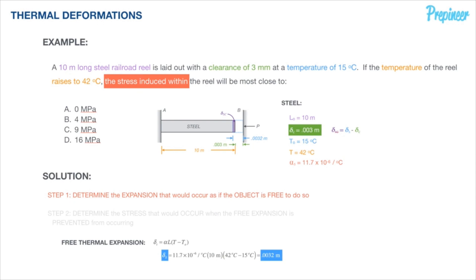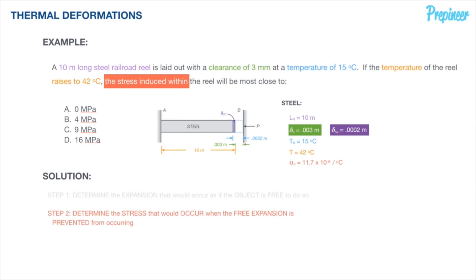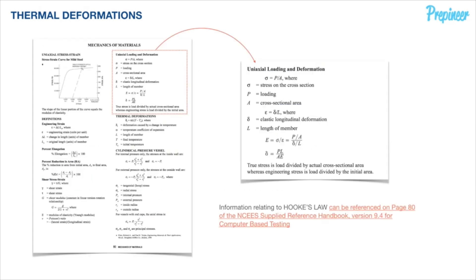Plugging in: our free expansion is 0.0032 meters, and our clearance is 0.003 meters, giving us delta_sc of 0.0002 meters. It's the slightest constraint, but due to that, there will still be a stress induced. Moving on to step two, we will determine what that stress will be.